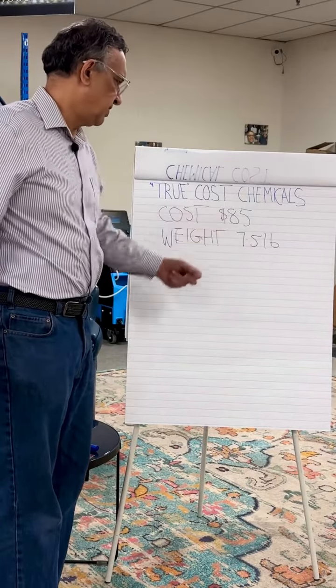You take the $85, which is the cost of the product, and divide that by 120, which is how many gallons it's going to make. When you divide that, it equals 70 cents. So basically, to make a gallon of this pre-spray, your actual cost is 70 cents per gallon ready to use. If you're not doing that with your chemicals, you really need to — it's going to tell you what your true cost is.